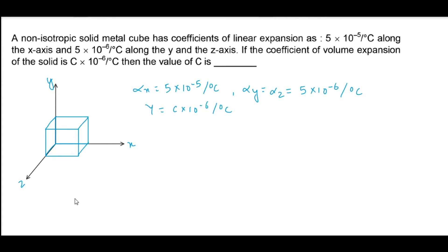Let's assume initially its length along x-axis is a0, along y-axis is b0, and along z-axis is c0. And from this state, we increase the temperature by T.